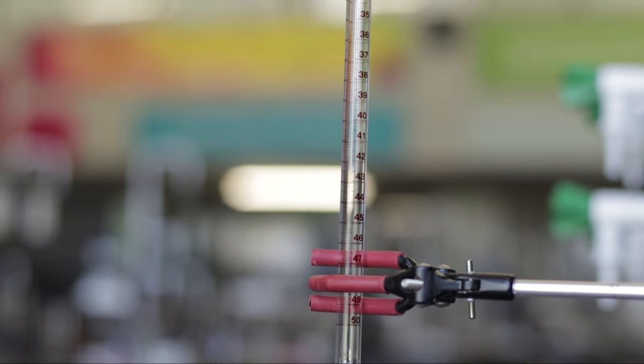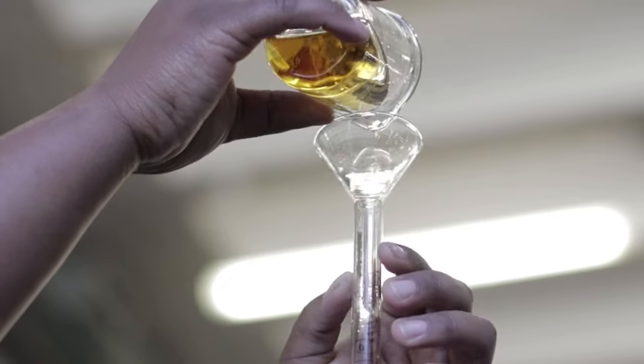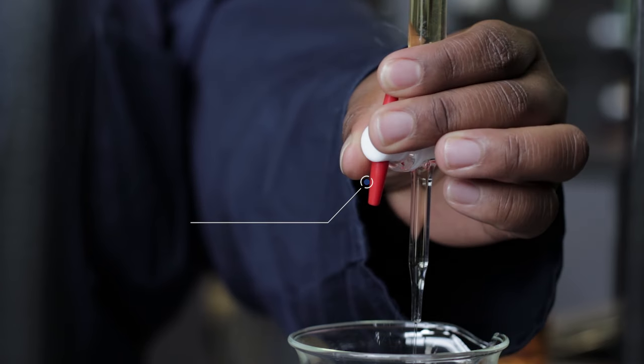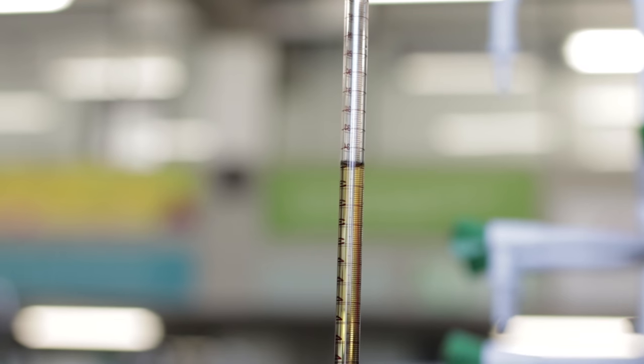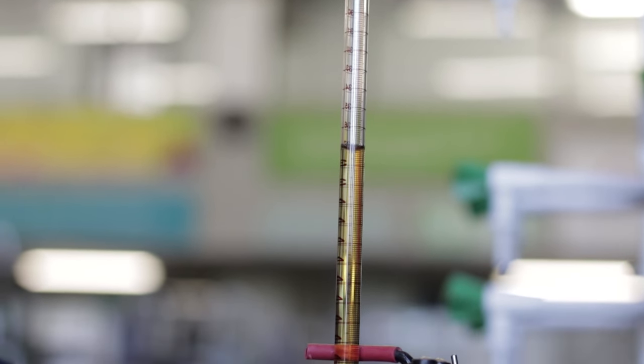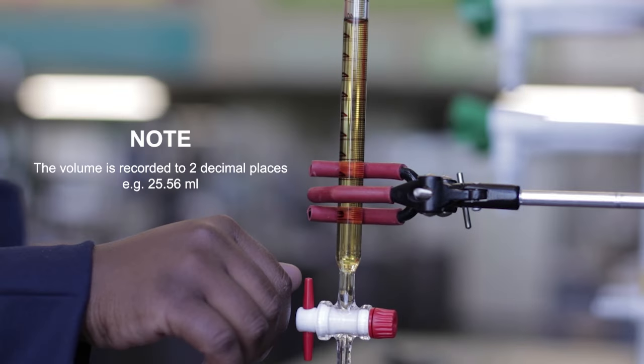A volumetric burette delivers a measured volume of solution. The flow of the liquid is controlled by the stopcock valve. Burettes are available in different sizes. A burette is usually used during a titration. The volume is recorded to two decimal places, for example 25.56 millilitres.